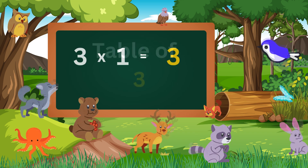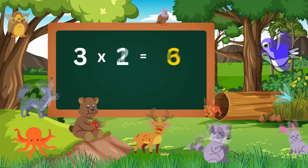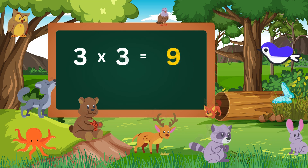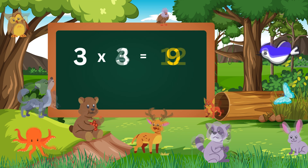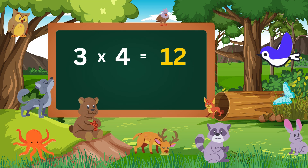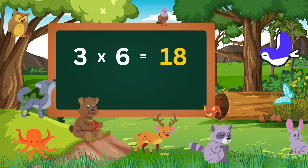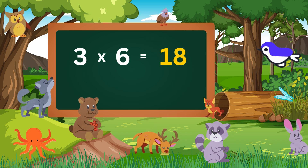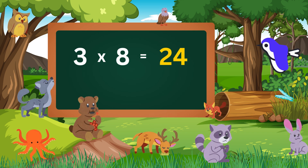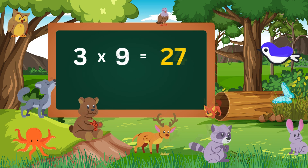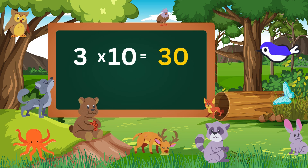Table of three. Three ones are three. Three twos are six. Three threes are nine. Three fours are twelve. Three fives are fifteen. Three sixes are eighteen. Three sevens are twenty-one. Three eights are twenty-four. Three nines are twenty-seven. Three tens are thirty.